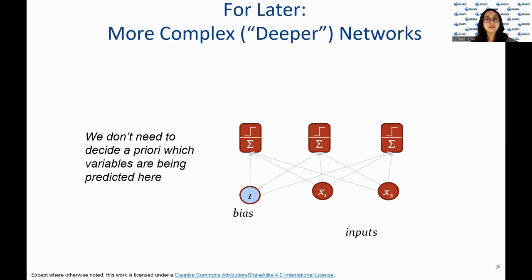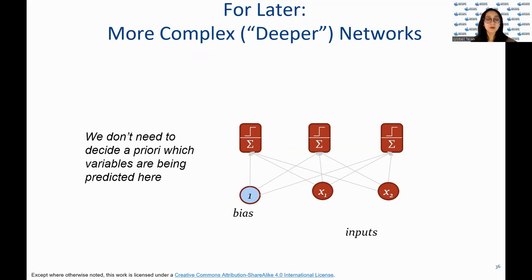Now let's briefly introduce the concepts of more complex and deeper neural networks. In more complex networks, we don't need to decide a priori which variables are being predicted. Deeper networks allow for more complex transformations of the input data, potentially leading to better performance on more challenging tasks. However, deeper networks can also be more difficult to train and may require more data to avoid overfitting. And suppose we are trying to predict one class but from three different composite characteristics, then this would require composition.